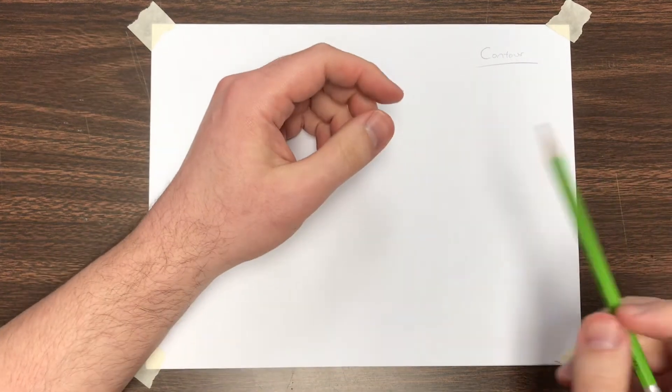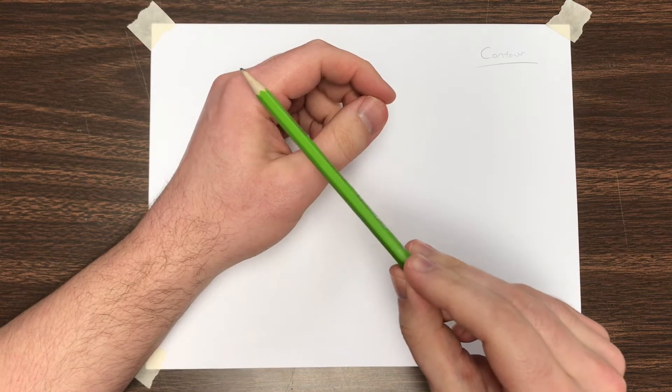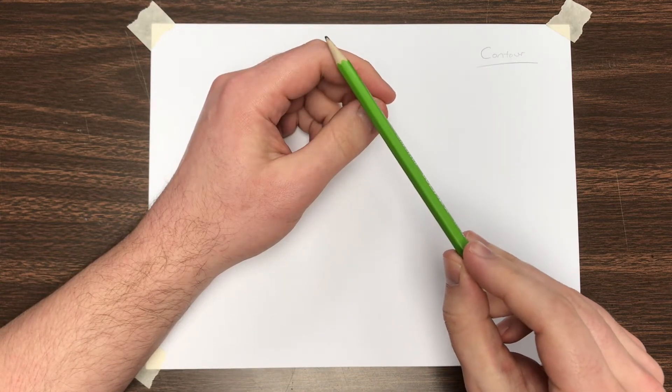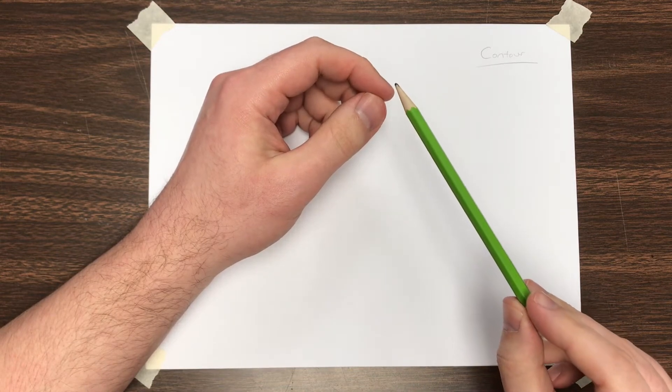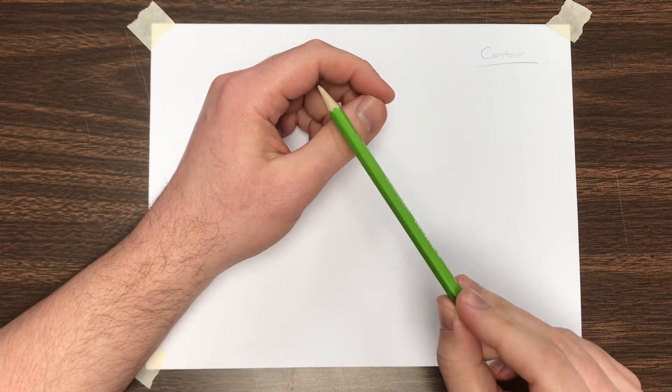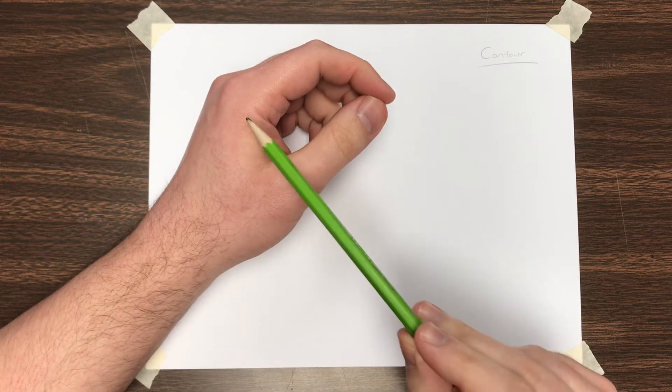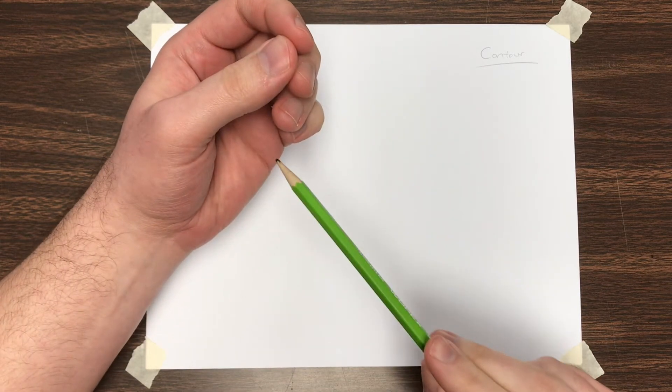So contour line drawing. When we say contour line, I generally mean the outside edge. So if we're looking at my hand, this is the outside edge of my hand, so I'm going to be focusing on that. All these lines that I see on the outside edges of every finger, the palm, the cracks that go in, these kind of lines, those are the lines you want to focus on. That is contour line.